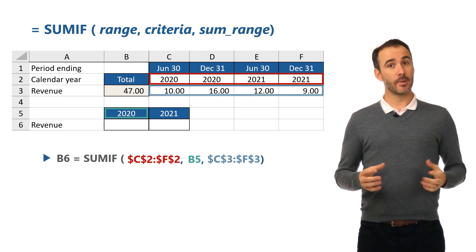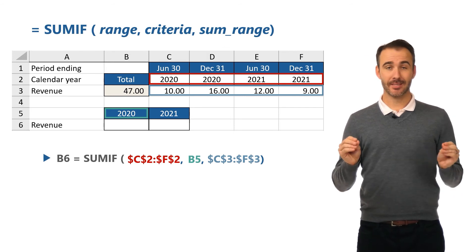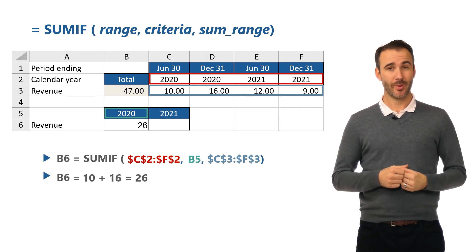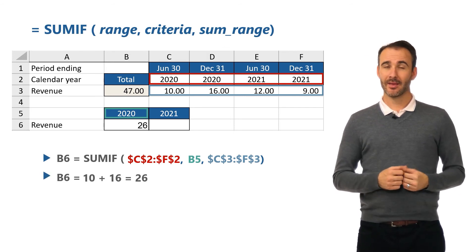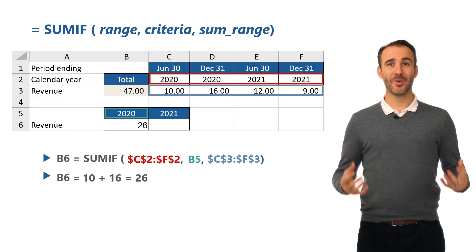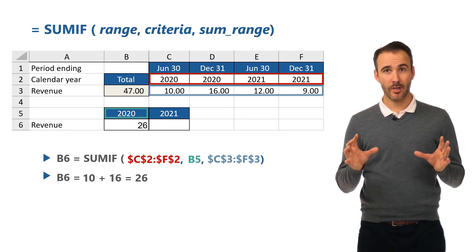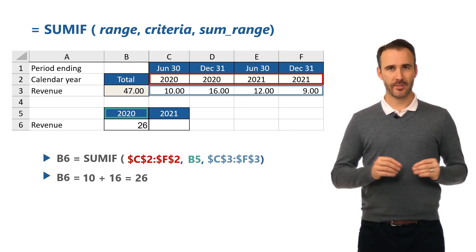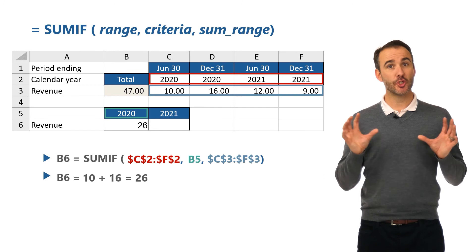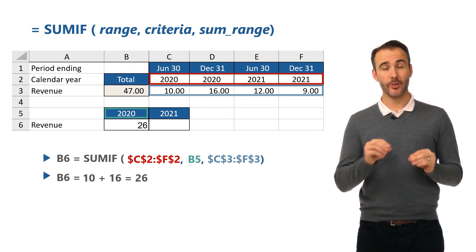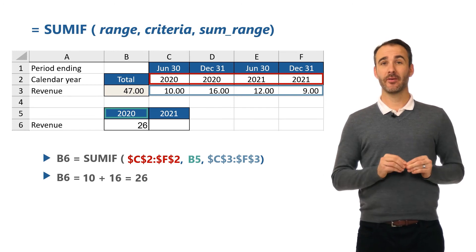The answer is simply 10 plus 16 equals 26. Just make sure you anchor the correct references. As a general rule when using SUMIF, you will most likely need to anchor your columns and probably also the rows.